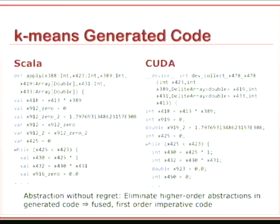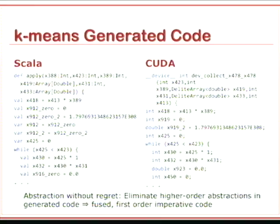At the end of the day, what you want to generate is code that runs efficiently and looks like Fortran. Fortran programmers and Fortran compilers provide the best performance because Fortran has no higher-order abstraction — all loops can potentially be fused together, and you have first-order imperative code with all abstractions gone. Ideally, you start with a high-level DSL with lots of abstraction that's easy to write, but at the end of the day you want code with no abstraction. And that's what we achieve with the DSL compiler.